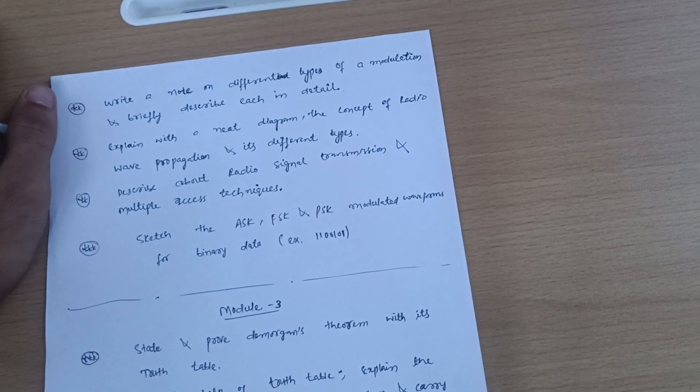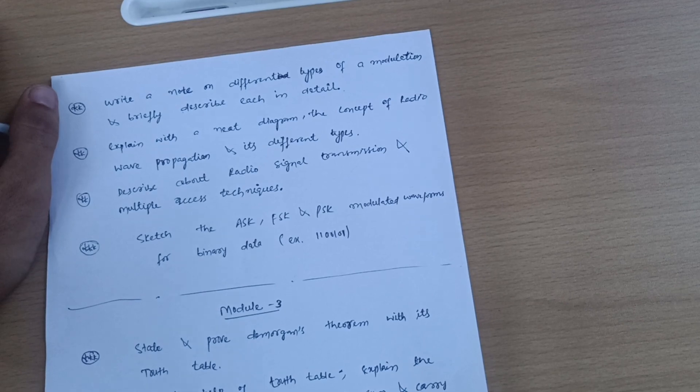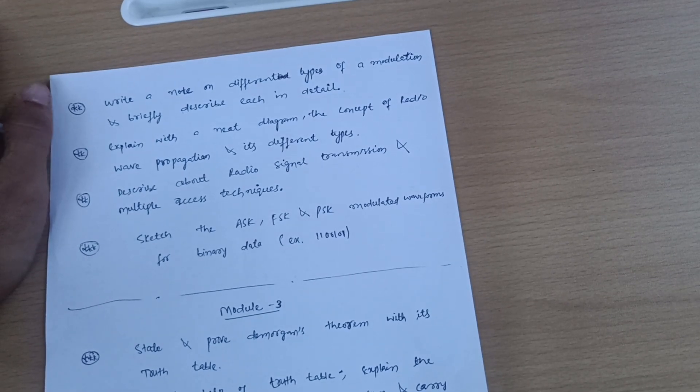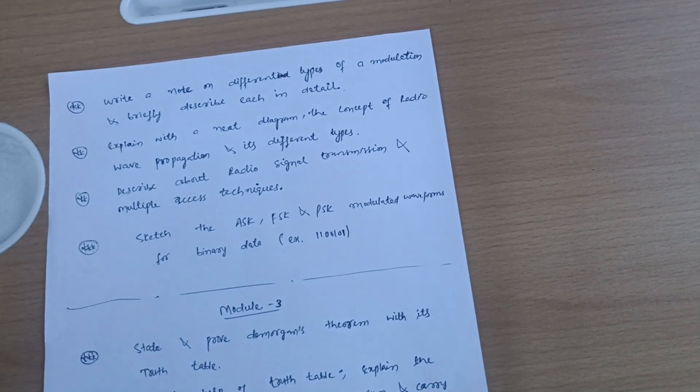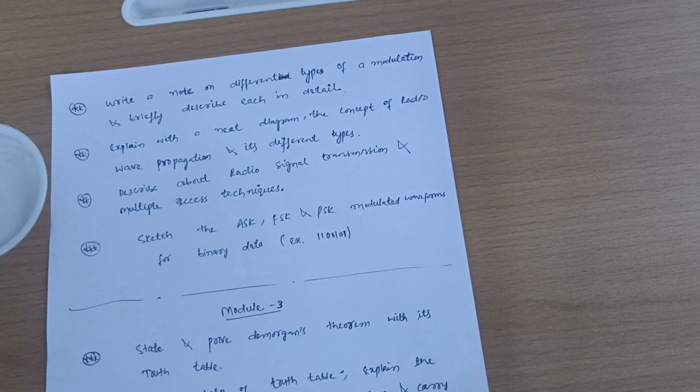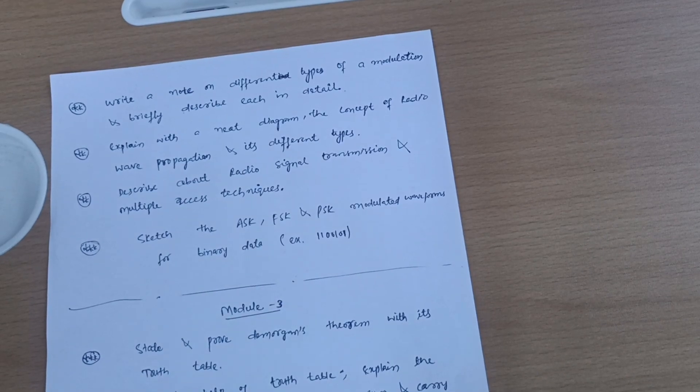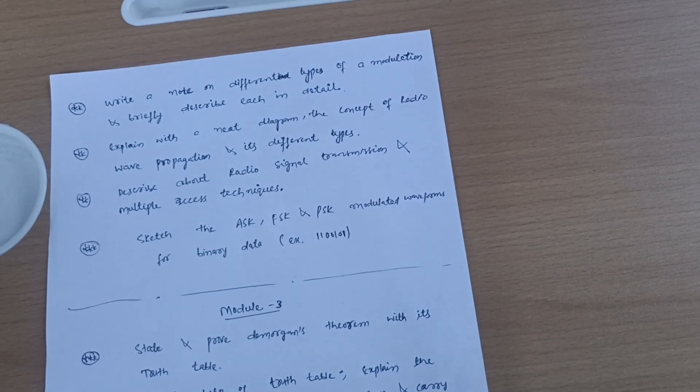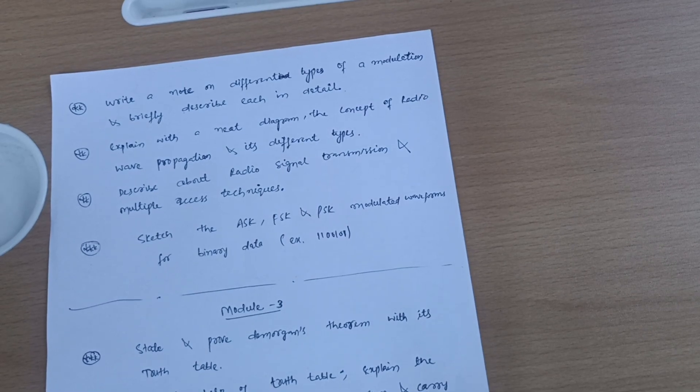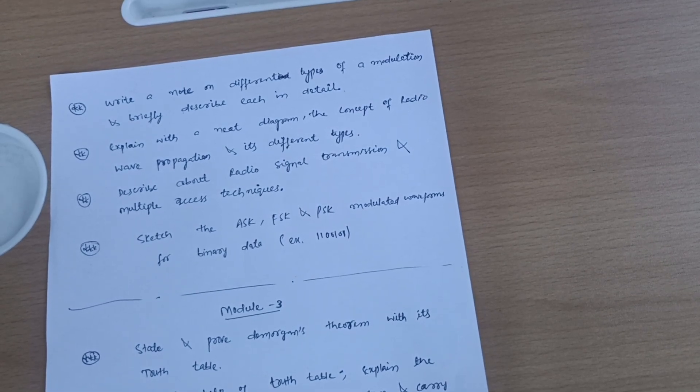You can easily score in this module also. These are the three modules which are the passing modules. If you go through fully for these modules, you would surely pass the subject. But sometimes VTU is unexpected - sometimes the papers are unexpected. So you cannot purely believe on three modules. You have to go for the rest of the two modules - take two questions from each, that is enough.